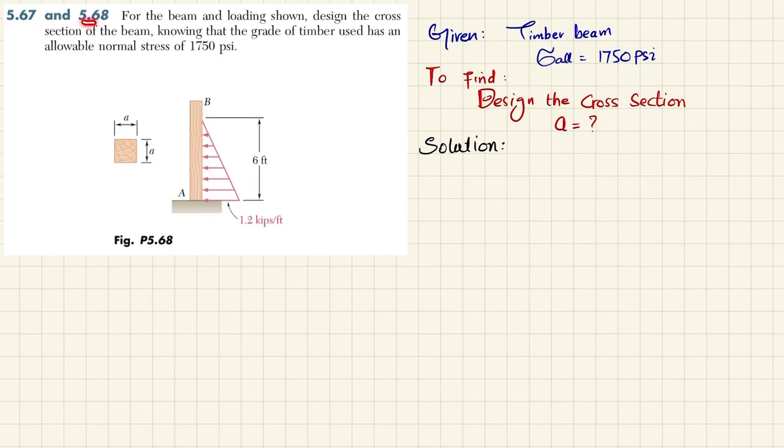Welcome back to problem 5.68. The statement is: for the beam and loading shown, design the cross-section of beam knowing that the grade of timber to be used has an allowable normal stress of 750 psi. Basically, you can see this